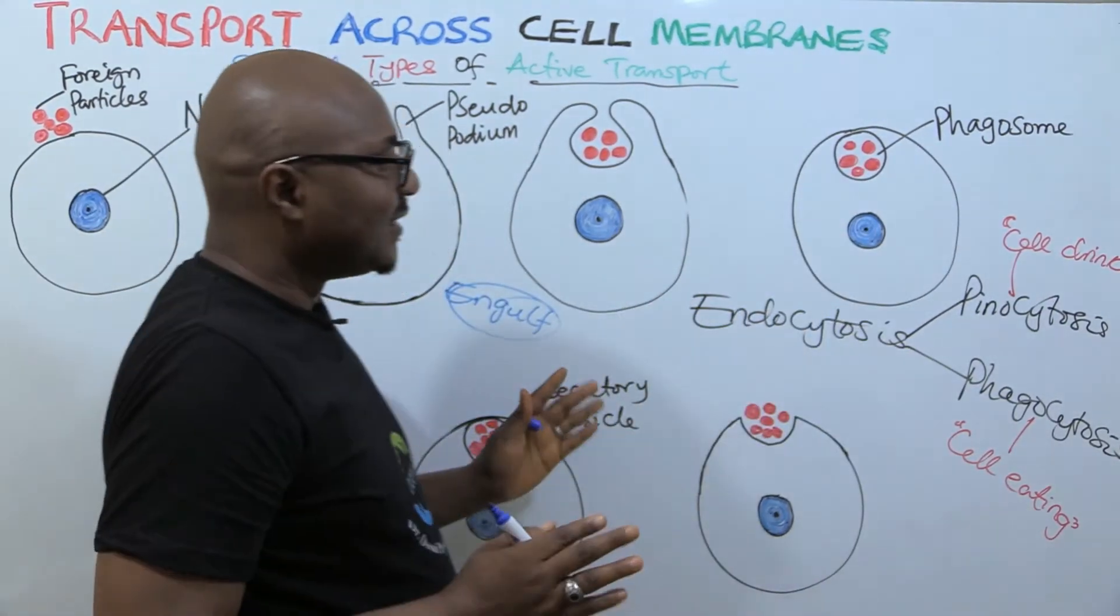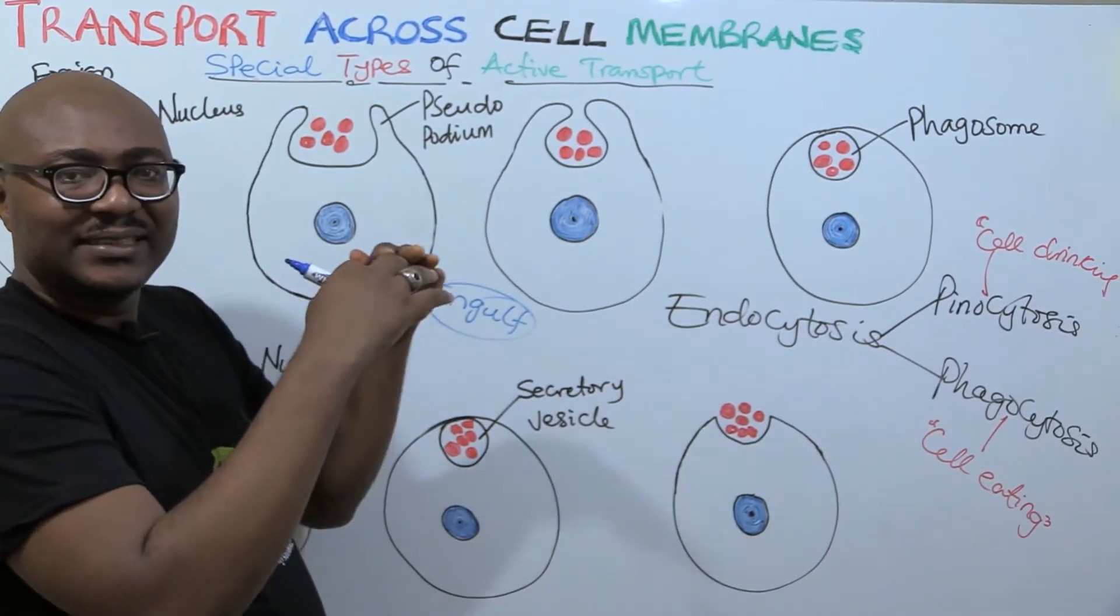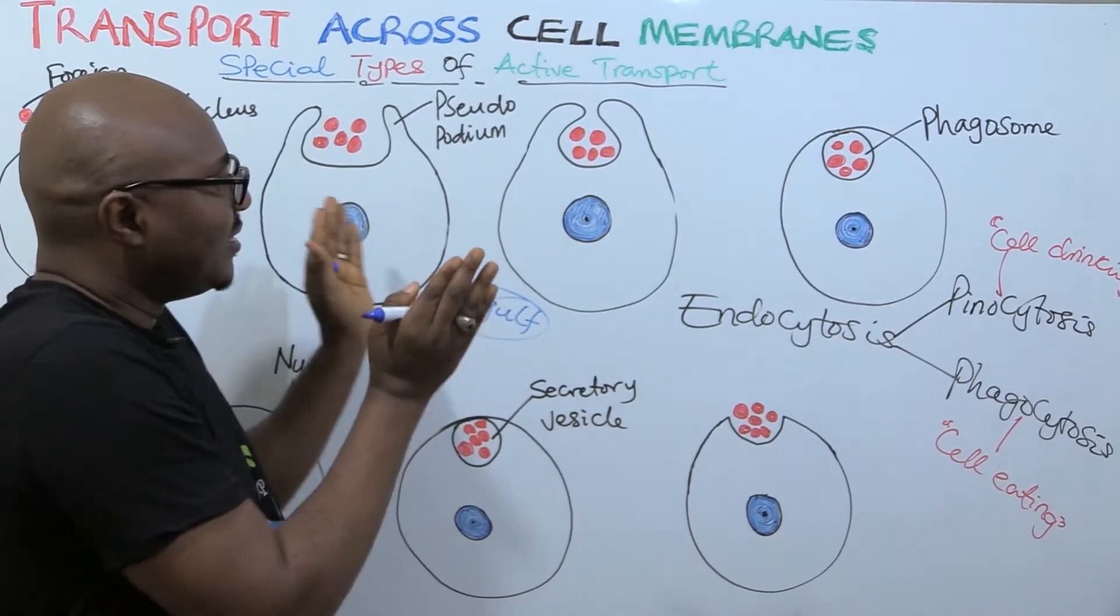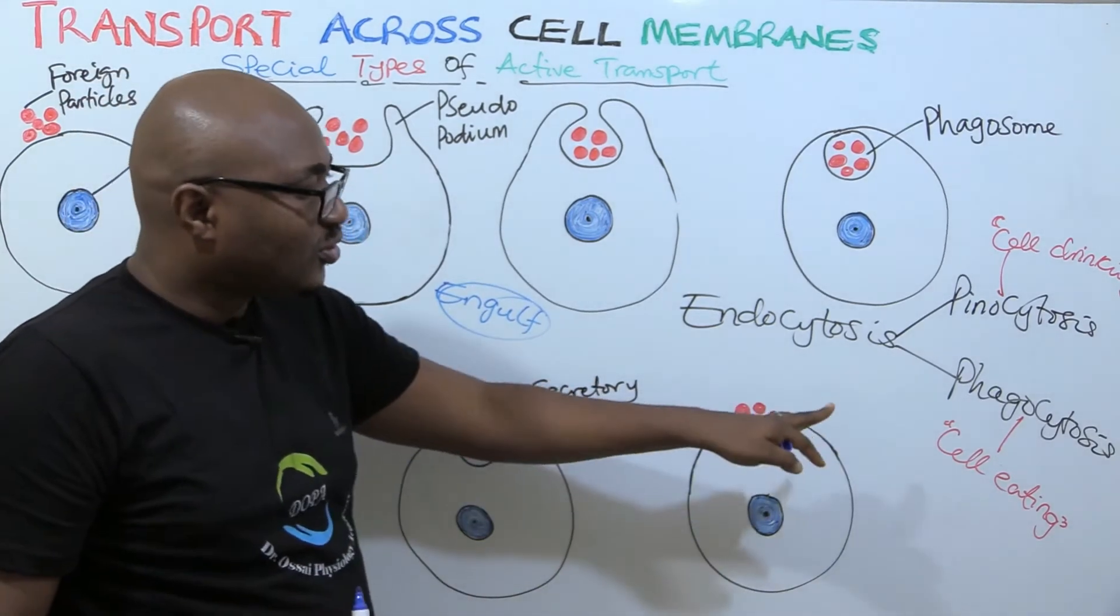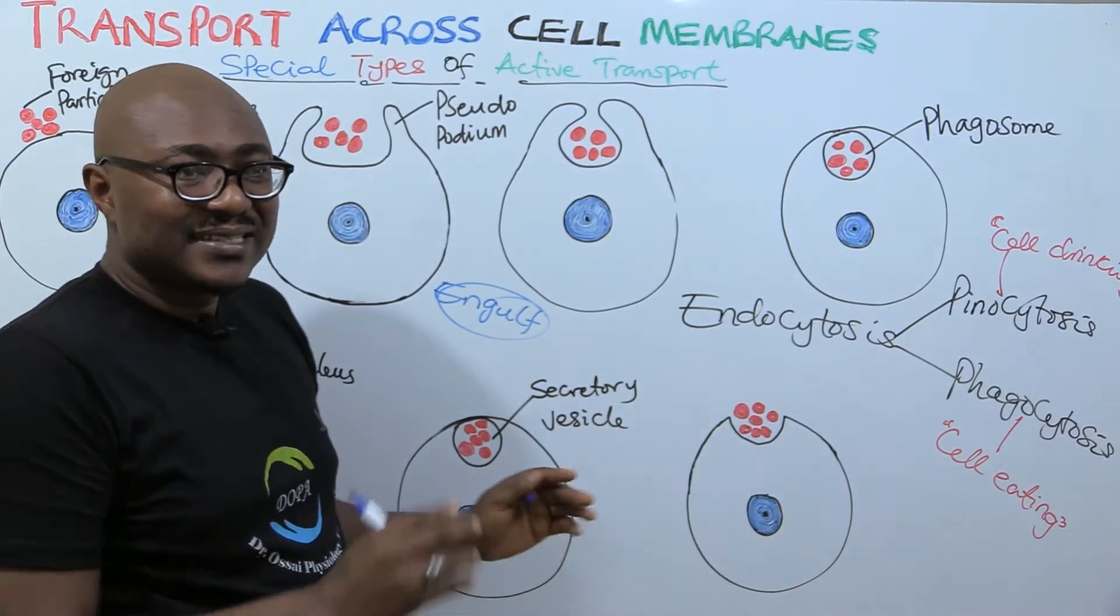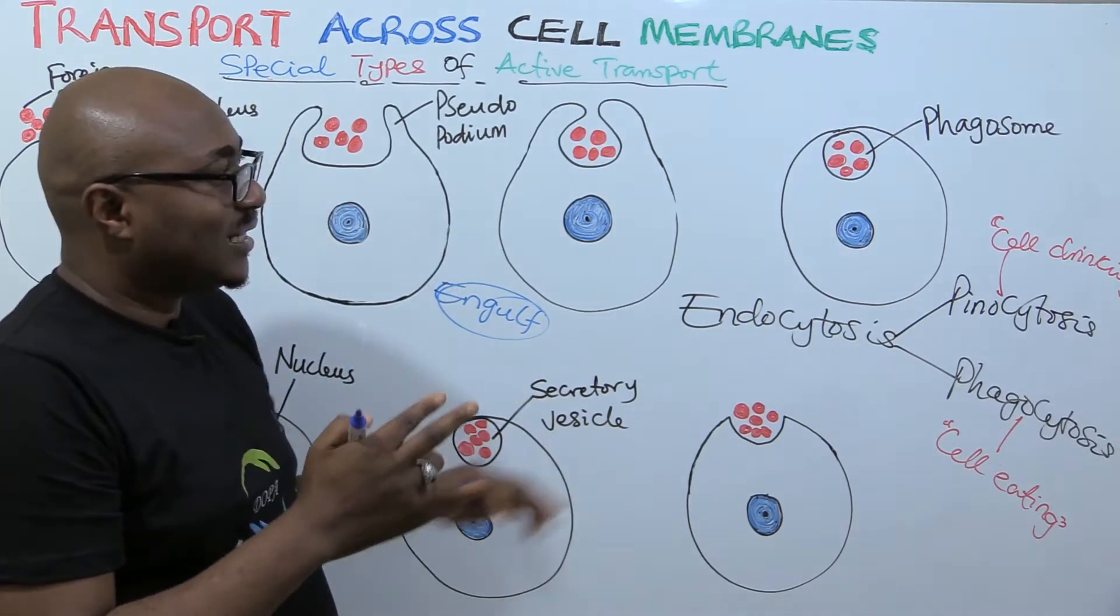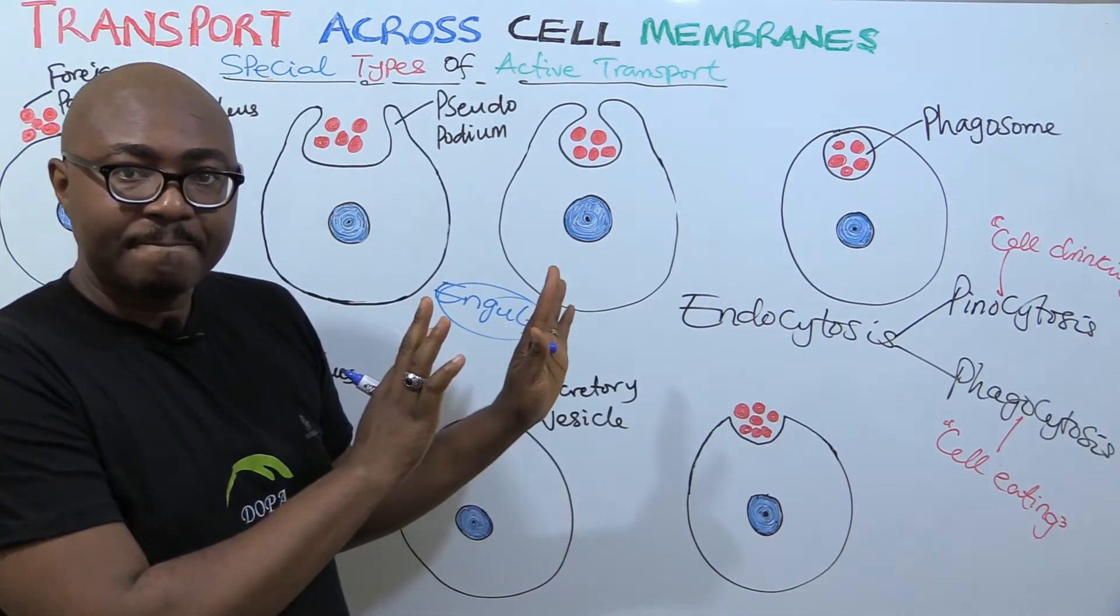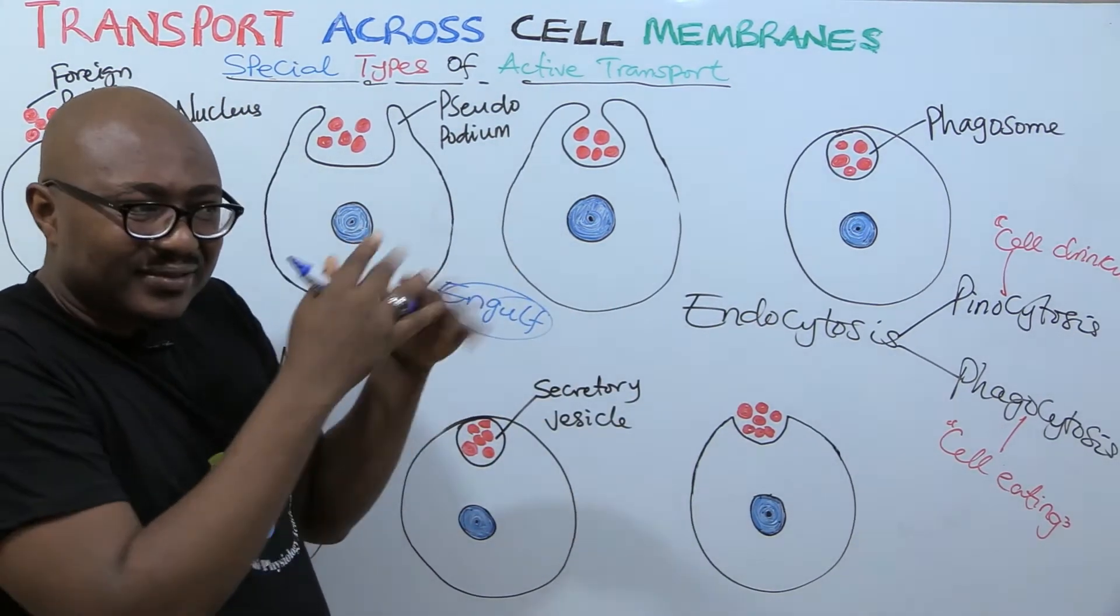And then the content of this thing is now called phagosome. If you look at it, a part of the cell membrane has been lost as a result of this. Because this thing now is a membrane, it now forms another body looking like a cell organelle itself. It's called the phagosome. So cell drinking is actually the taking in of liquid molecules, liquid substances. That's why it's called drinking. But they are macromolecules.